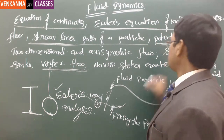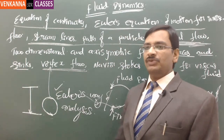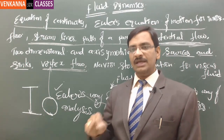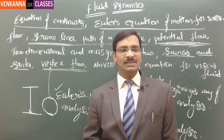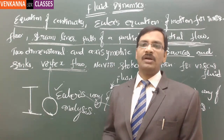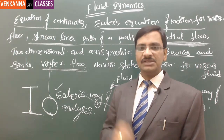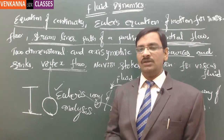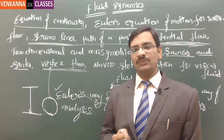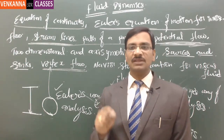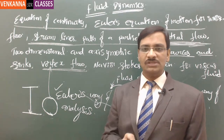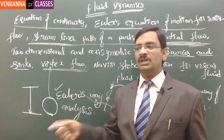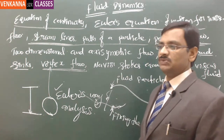Sources and sinks: a source is where there is continuous generation of fluid at one location — like water continuously coming out of a bore. A sink is where fluid continuously vanishes at one location — like a hole draining water. Sources and sinks have a great influence on the direction and velocity of fluid flow. Between a source and a sink, water flows from one to the other. These are modeled as complex potentials as well.